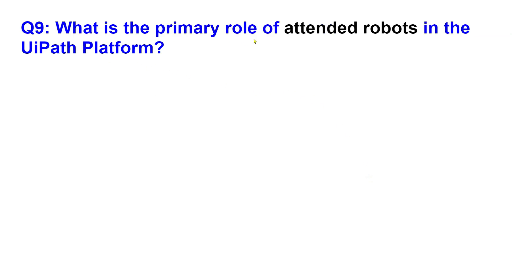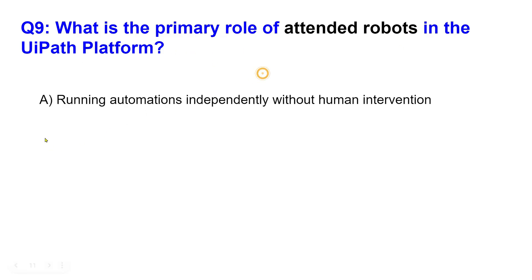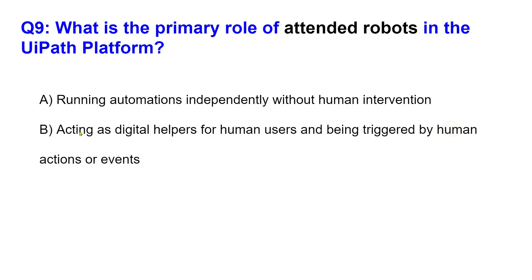What is the primary role of attended robots in the UiPath platform? Here are your options. Option A: running automations independently without human intervention. Option B: acting as a digital helper for human users and being triggered by human actions or events.